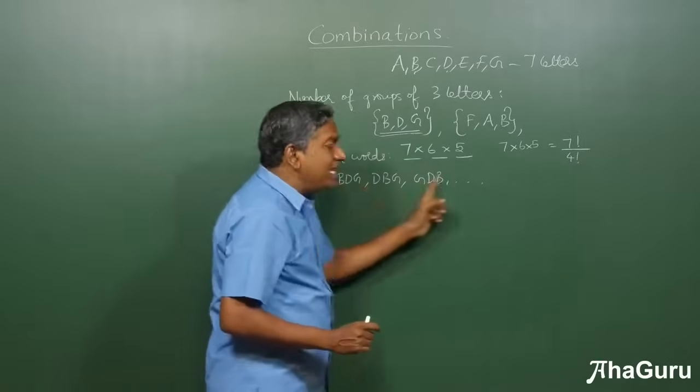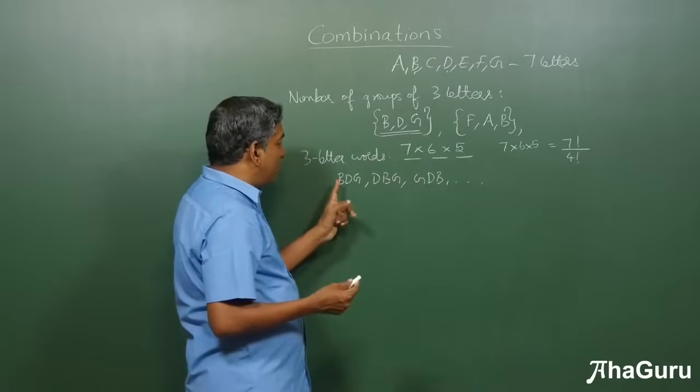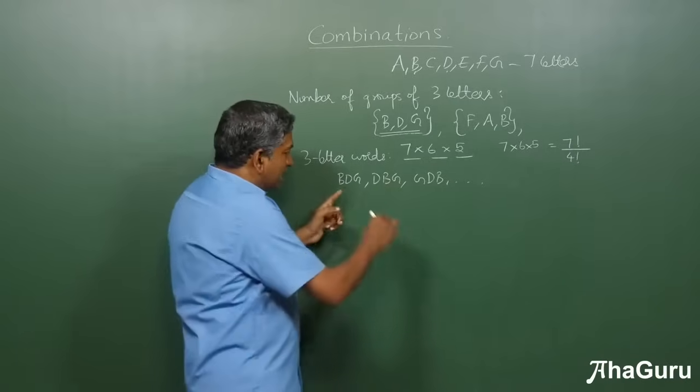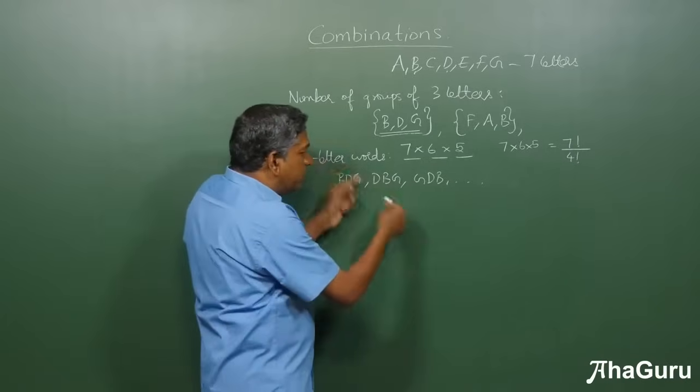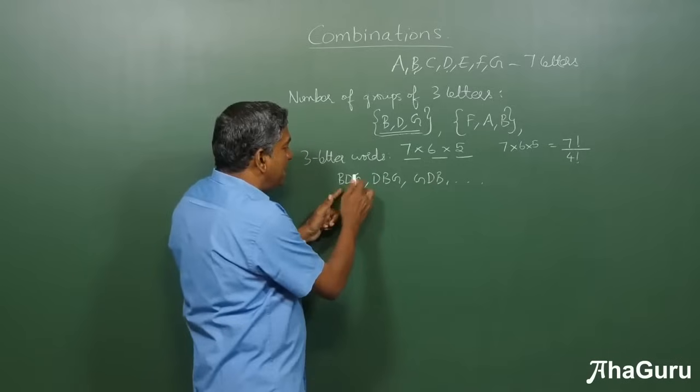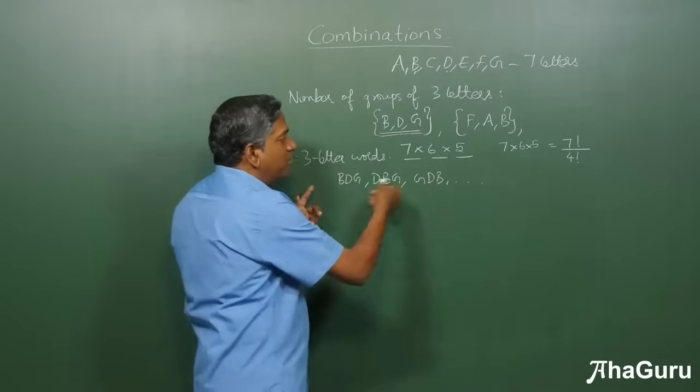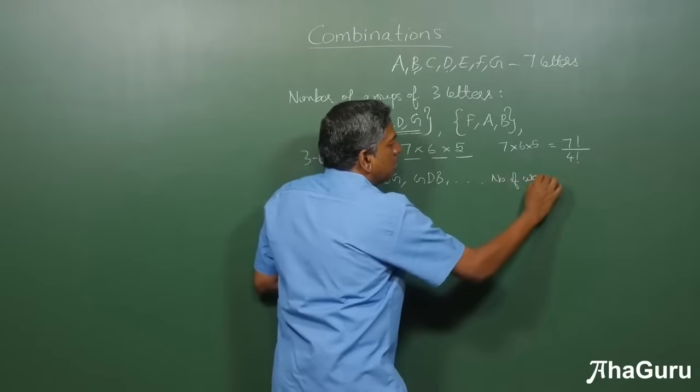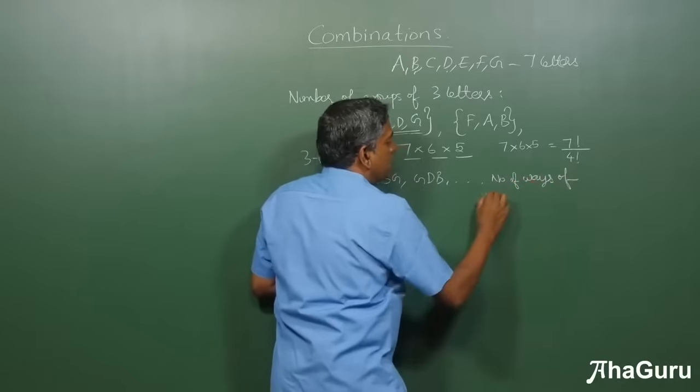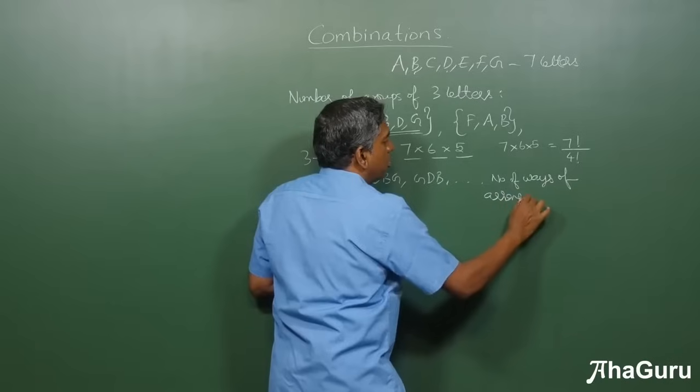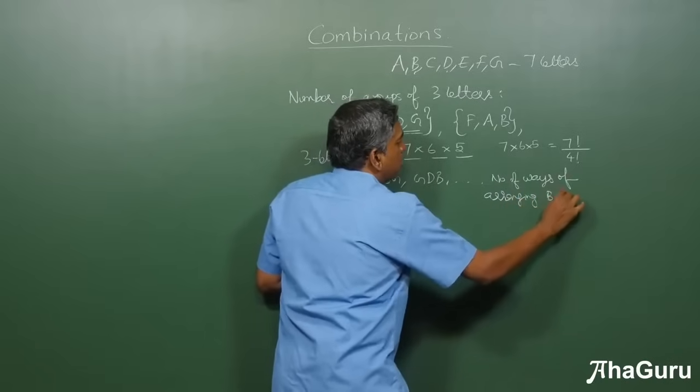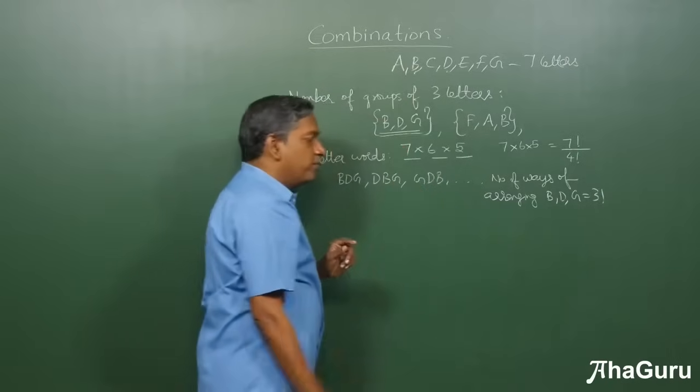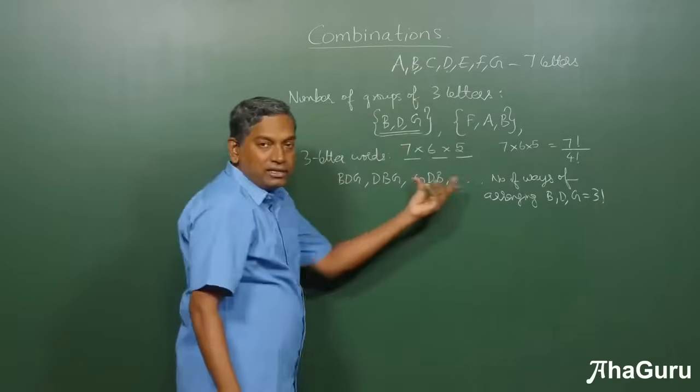But how many is this? Well, that's not very difficult, because once you have B, D, and G, these words are just different arrangements of the letters B, D, and G. So, the number of ways of arranging B, D, G is 3 factorial, okay? That's because there are 3 letters.